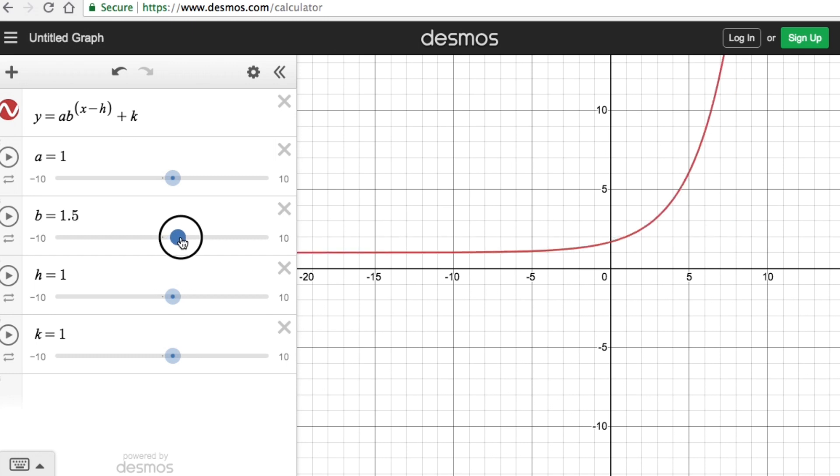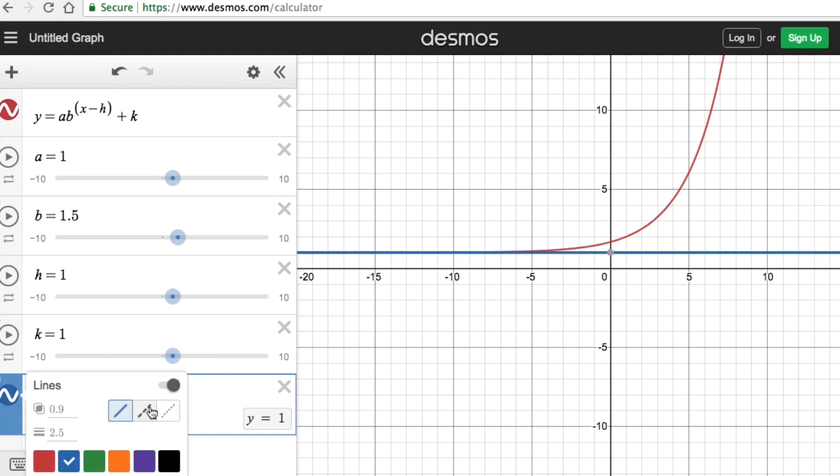We also remember that an exponential function is a type of graph or curve where it approaches a line, which we call an asymptote. The equation for the asymptote of an exponential function is y equals k, and we're going to represent this asymptote with a broken line.